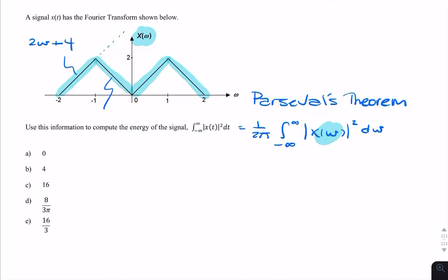This one here has a gradient of minus 2. This one here has a gradient of 2. And this one here has a gradient of minus 2, but it also has a y-intercept of 4.